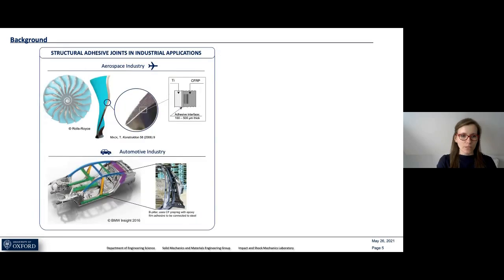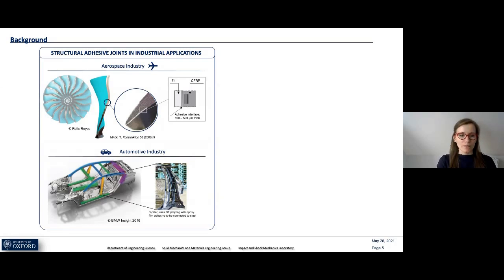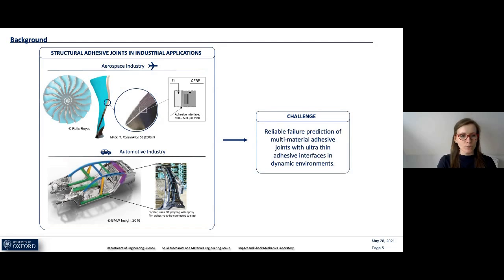To give examples of industrial applications where structural adhesive joints are used: one is the latest Rolls-Royce aero engine generation, the UltraFan, where the fan blade is made of carbon fiber reinforced polymer with the leading edge reinforced with a titanium alloy. For the automotive industry, the BMW 7 Series has a B-pillar that is a combination of a steel and composite adhesive joint. However, these structures must also be reliable in dynamic events such as car crashes or foreign body impacts, posing a challenge for reliable failure prediction of those multi-material adhesive joints, especially at the very thin adhesive interface in dynamic environments.